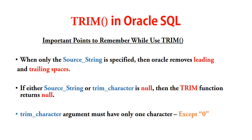There is an exception: zero. We can give 0 or 0000 — any number of zeros. But for any other number like 1, 2, or 3, you must specify only one character. When trimming any character or string, you must specify the trim character in single quotes. When trimming a number, you give it directly — no single quotes needed; but characters always need single quotes.